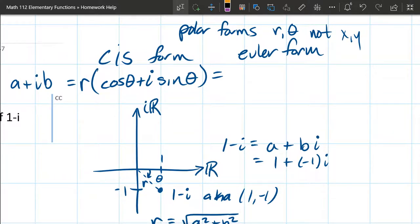Euler form is a lot more simple. r, you still multiply by r at the front, and then you have e to the i theta.